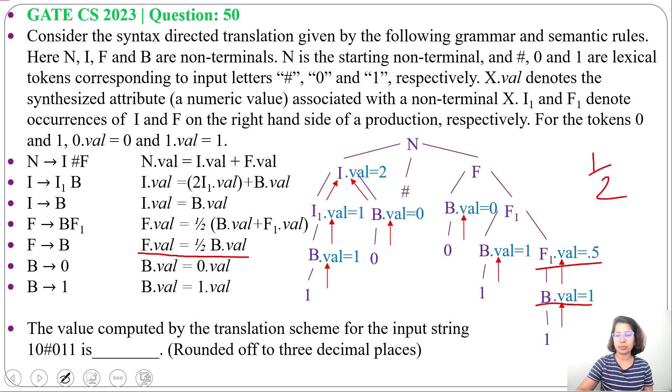Next, for this production, F derive B F1. The semantic rule is F value equals half of B value plus F1 value. So, half of B value is 1 plus 0.5. So, it is half of 1.5. Half of 1.5 is 0.75. So, F1 value is 0.75.